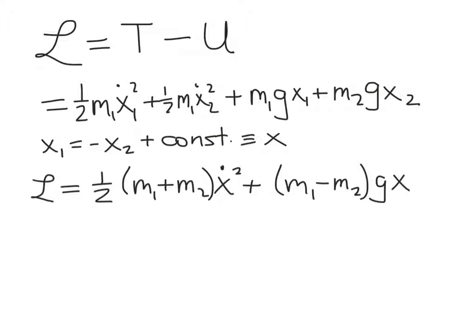So then when we write our Lagrangian, remember, it's the kinetic energy minus the potential energy. So here's our kinetic energy, sum of the kinetic energy for each of the masses, and then here are our potential energies. Now, remember, we're doing minus the potential energy, and so those minus signs on the potential energy, they become pluses now.